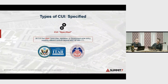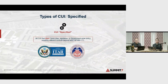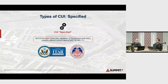Next up is CUI Specified. CUI Specified has a law, regulation, or government-wide policy saying you have to do things above and beyond NIST 800-171. One of the favorites we talk about is DFAR-7012 — you've got to do cyber incident reporting with covered defense information, flow-downs for potential forensic imaging, and all sorts of requirements including having an appropriately built external cloud provider if you're using such technology.